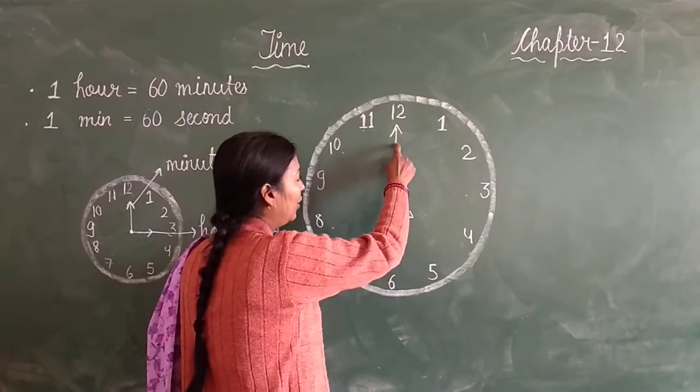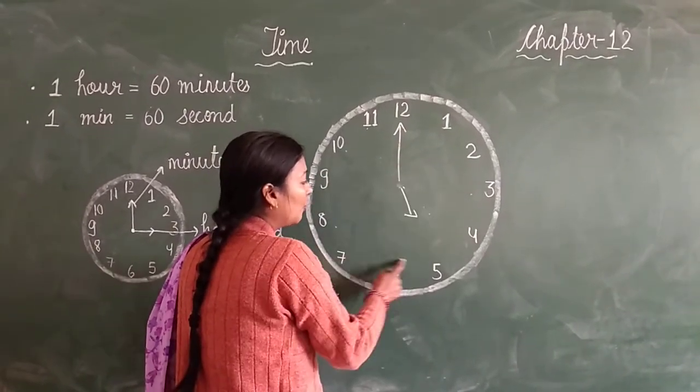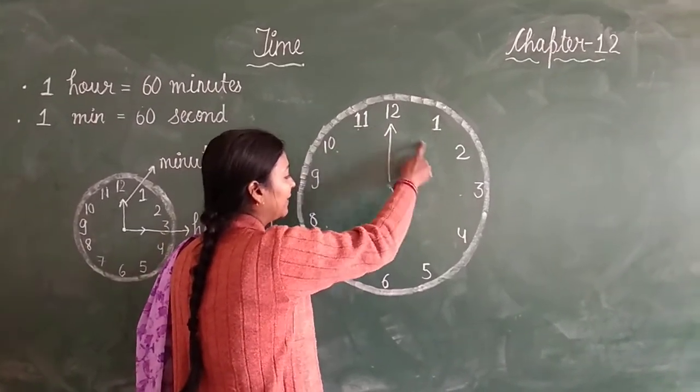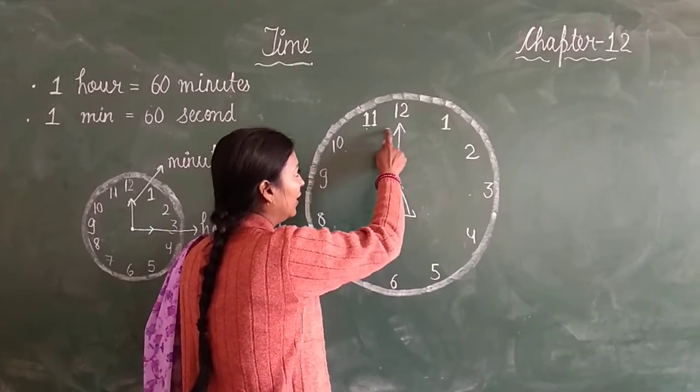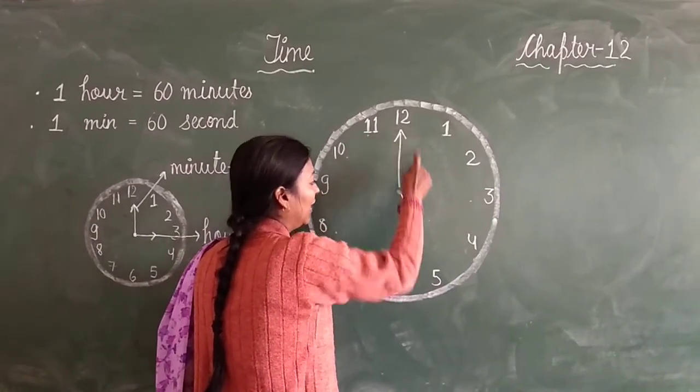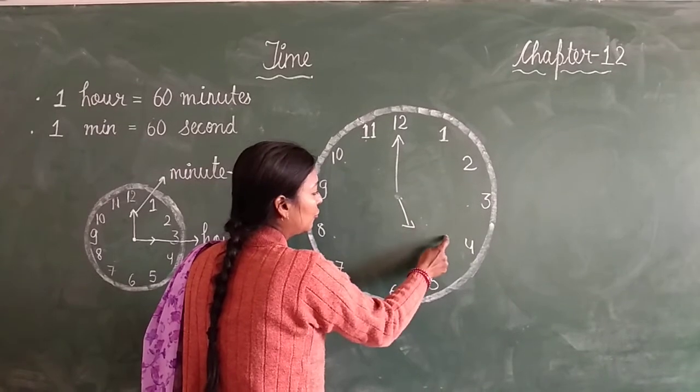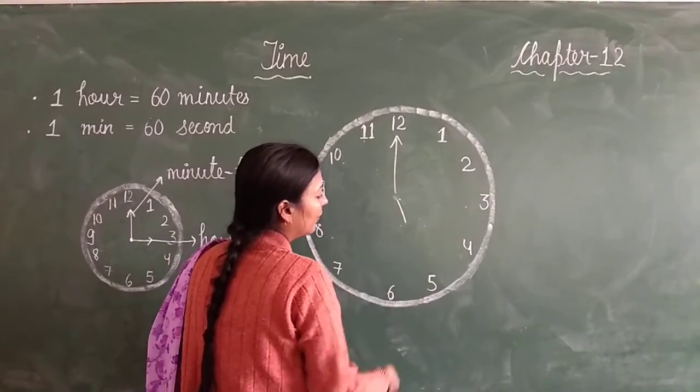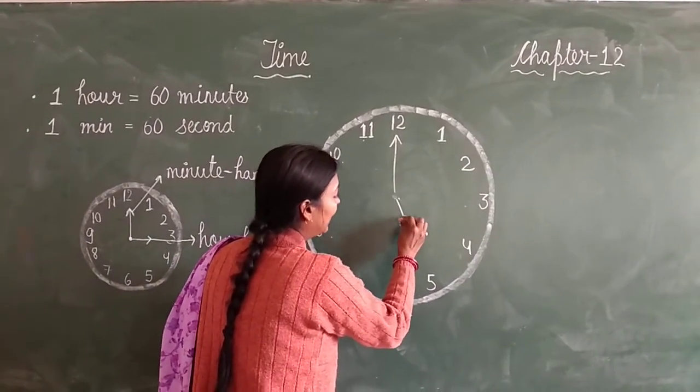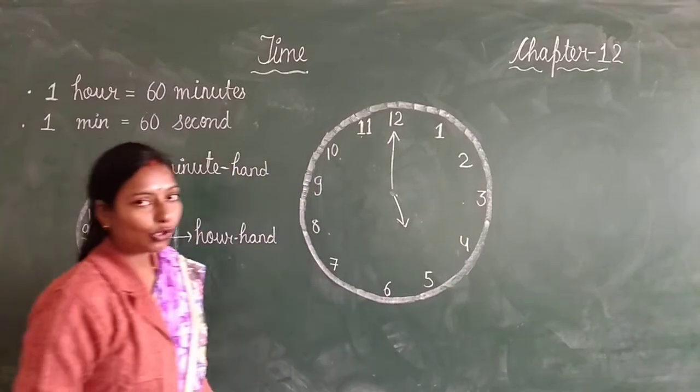This long hand goes through the same line and makes a circle. Then it comes again to 12 and your short hand goes and comes to 5. Then it will be 5 o'clock.